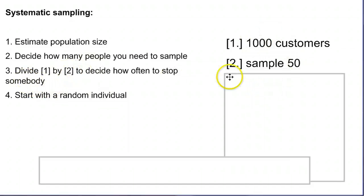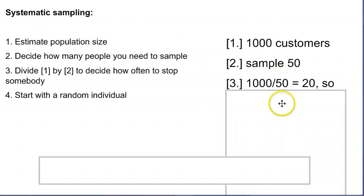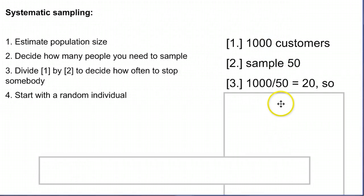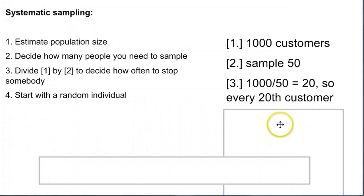Then we divide these two numbers. So we have a thousand customers that are likely to come in, we want to get a sample of about 50. So we're going to take a thousand divided by 50 and that's going to equal about 20. So that means that we're going to talk to every twentieth customer that comes in the door. And hopefully, if we get our numbers right, we should get a sample of about 50.